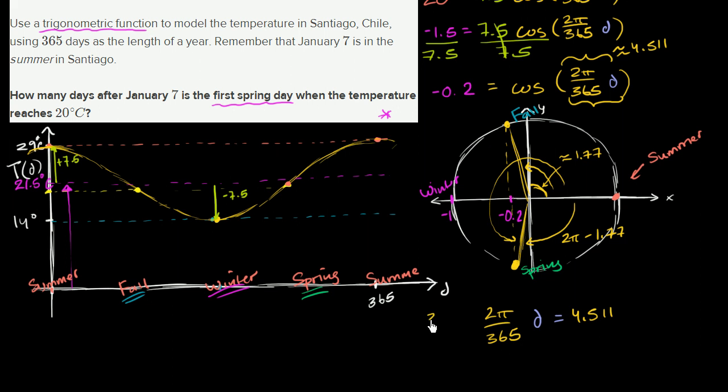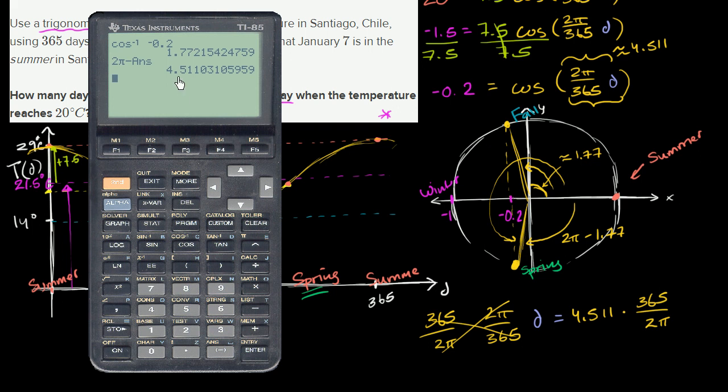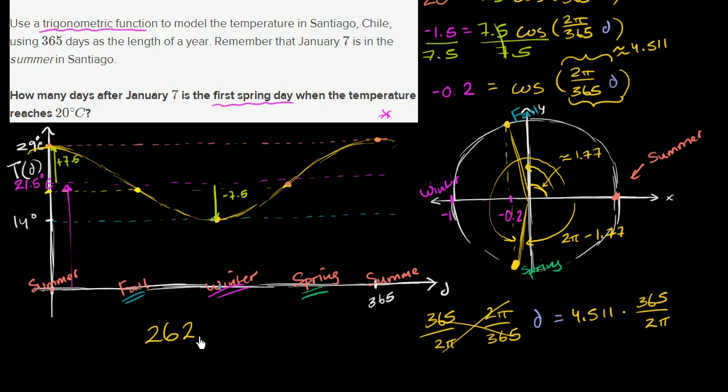To solve for days, we can just multiply both sides times the reciprocal of the coefficient. So we're going to multiply both sides times 365 over 2π. And now we can use our calculator for this. So let's take our previous answer times 365, we deserve a drumroll here, divided by 2π. And we get 200, and if we round to the nearest day, 262 days after January 7th. So 262 days. And we are done.